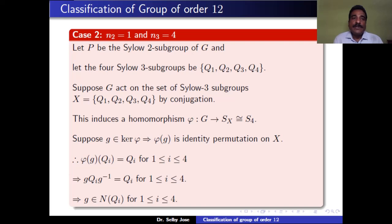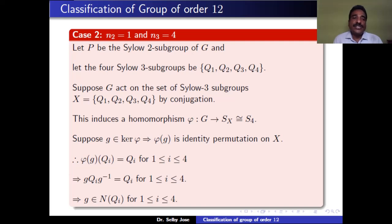Case 2: N2 = 1 and N3 = 4. G has a unique Sylow 2-subgroup and four Sylow 3-subgroups Q1, Q2, Q3, Q4, with P the unique Sylow 2-subgroup. Suppose G acts on X, the set of all Sylow 3-subgroups, by conjugation. This action induces a homomorphism φ from G to SX, the set of all permutations on X. Since X has 4 elements, SX is isomorphic to S4.